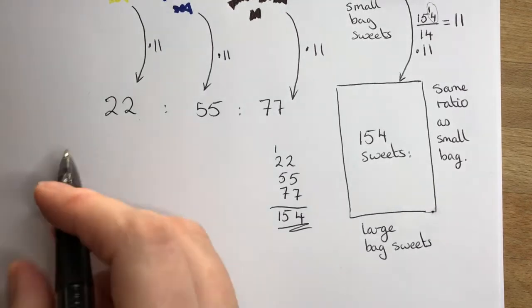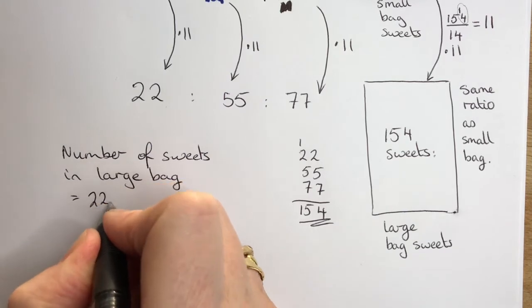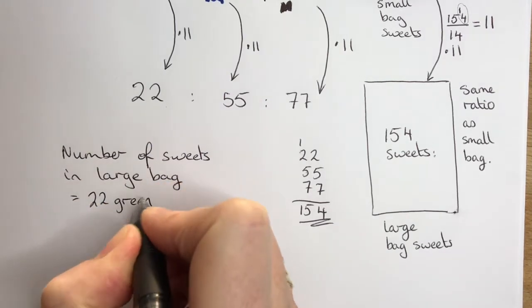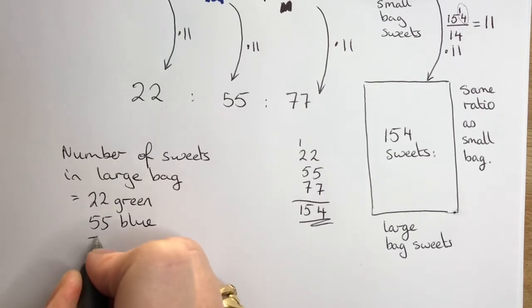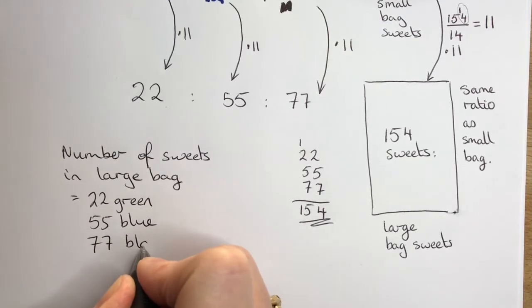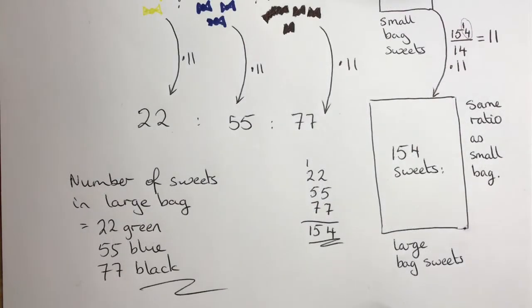Now we can answer the question. Number of sweets in the large bag is 22 green, 55 blue, and 77 black.